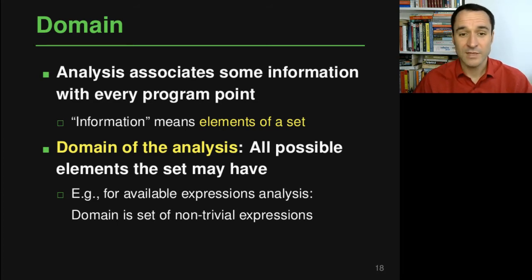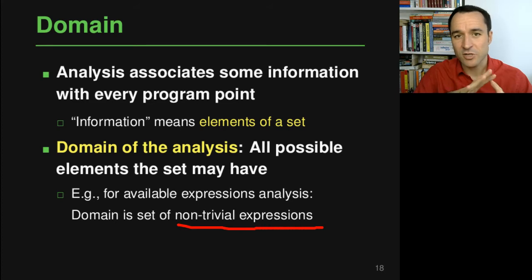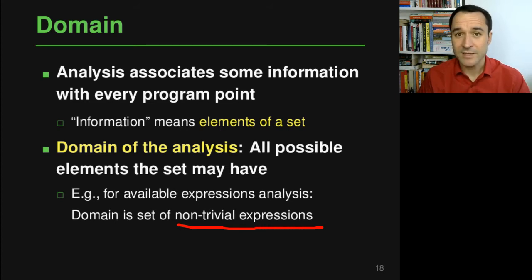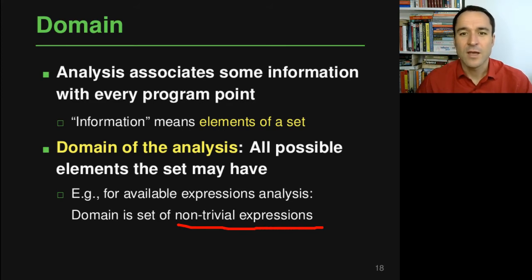For the available expressions analysis that we've already seen, the domain is the set of all non-trivial expressions. All the non-trivial expressions that occur somewhere in the program are in the possible set of available expressions that we may see at the different points in the program, and what the analysis does is compute the right subset for every program point.